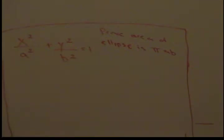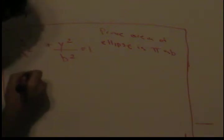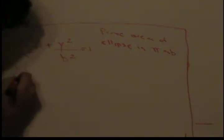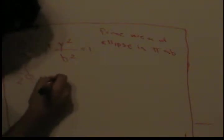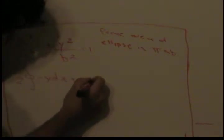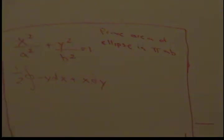Using this formula here: one half times negative y*dx plus x*dy, we can prove that the area of the ellipse is π*a*b. Let's go ahead and start this problem.